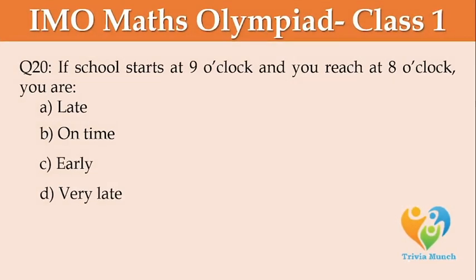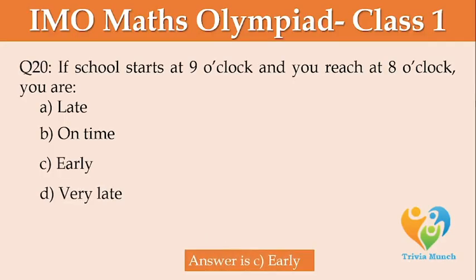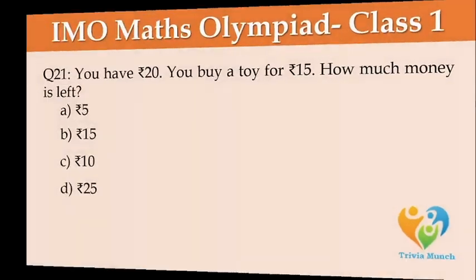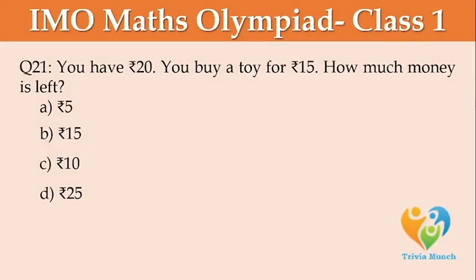If school starts at 9 o'clock and you arrive at 8 o'clock, you are: Option A: late, Option B: on time, Option C: early, Option D: very late. You have 20 rupees and you buy a toy for 15 rupees. How much money is left? Option A: 5 rupees, Option B: 15 rupees, Option C: 10 rupees, Option D: 25 rupees.